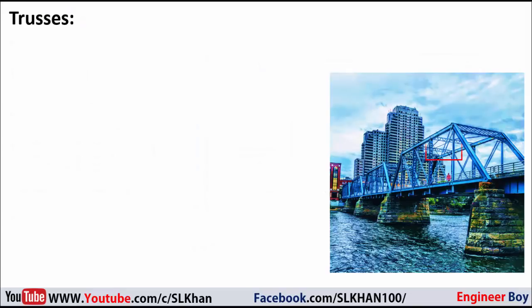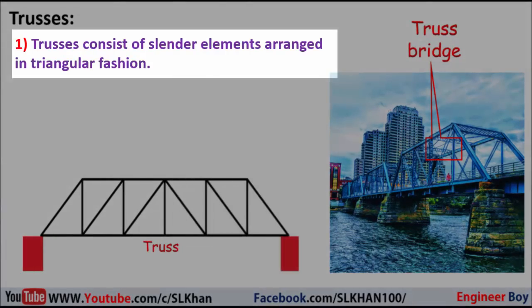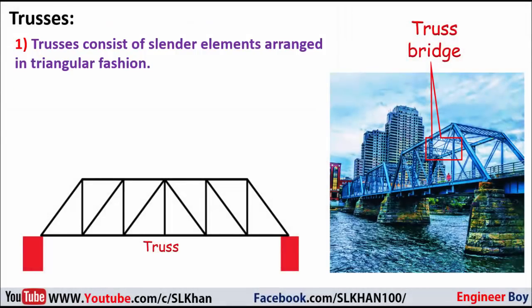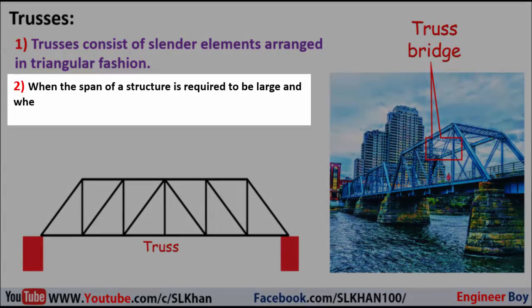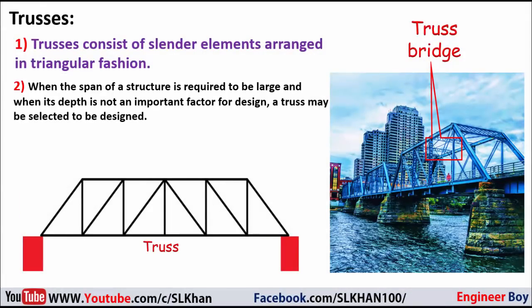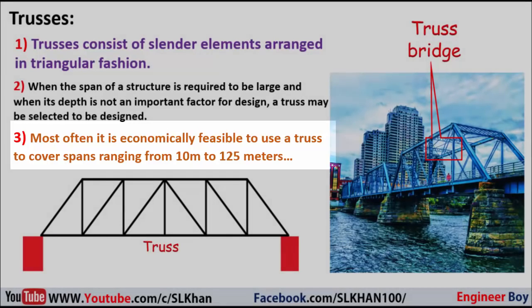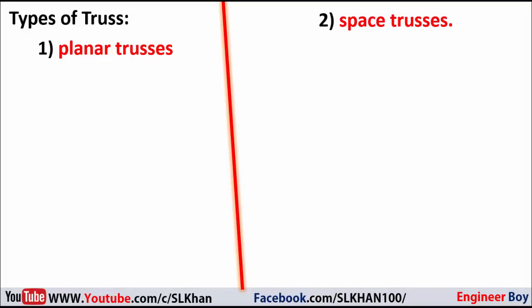Trusses consist of slender elements arranged in a triangular fashion, as you may have seen in bridges. They are used when the span of a structure is required to be large and when depth is not an important design factor. It is most often economically feasible to use a truss to cover spans ranging from 10 meters to 125 meters.